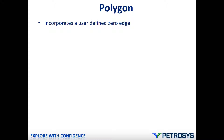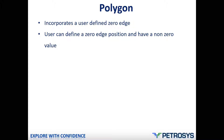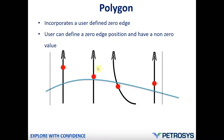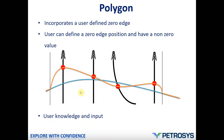If increasing the distance still doesn't work, consider using the polygon method. The polygon method also incorporates a user-defined zero edge, but it's up to the user to define this edge using a polygon, and it can also have a non-zero value. Instead of having a radius around each well, we have a polygon specifying within which area we would like to make the correction. The edges of this polygon may set a different distance in different directions. Outside of the polygon area there will be no correction added, whereas within the polygon area Petrosys will apply the correction. The method is very good in that it allows user knowledge and input.